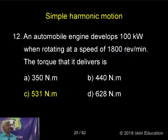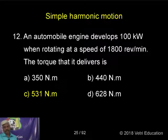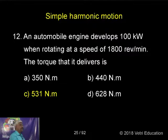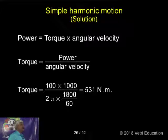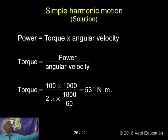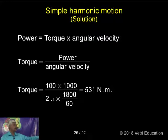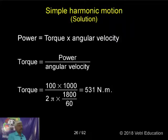An automobile engine develops a power. Power is also F into V. Here, power equals Tau into Omega — Tau Omega is equal to power. Therefore, from the power value, we can find out the torque. Torque into angular velocity equals power, therefore torque is equal to power divided by angular velocity. That can be calculated.